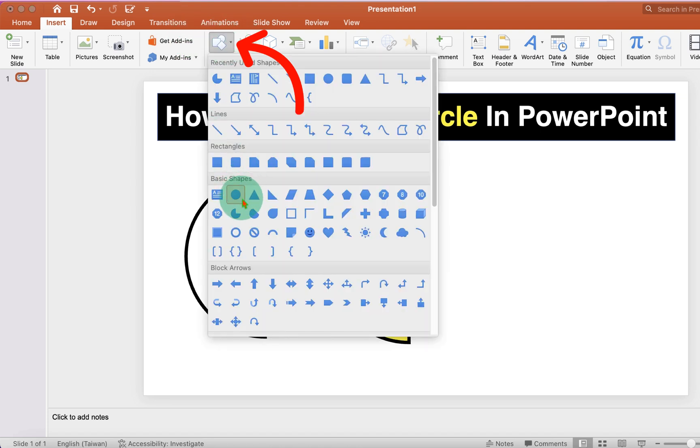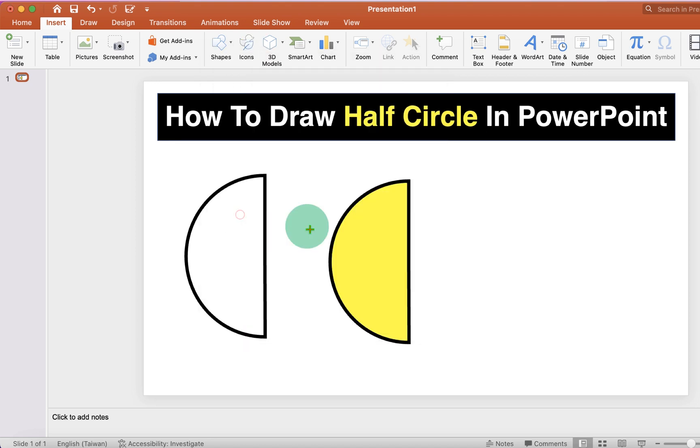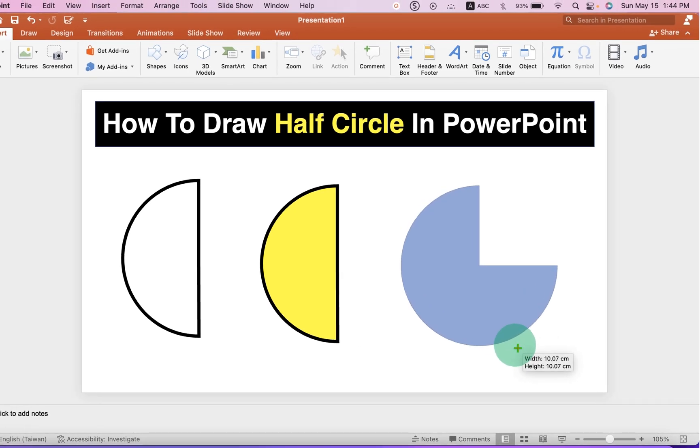select the option Partial Circle. Now press Shift on your keyboard, hold the Shift button, and then draw a partial circle.